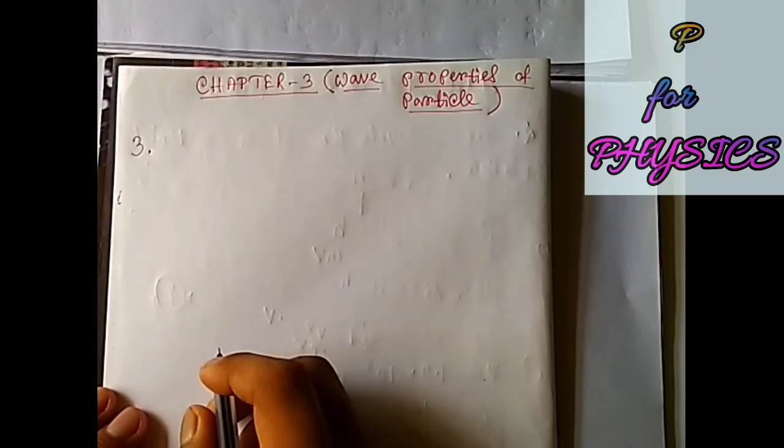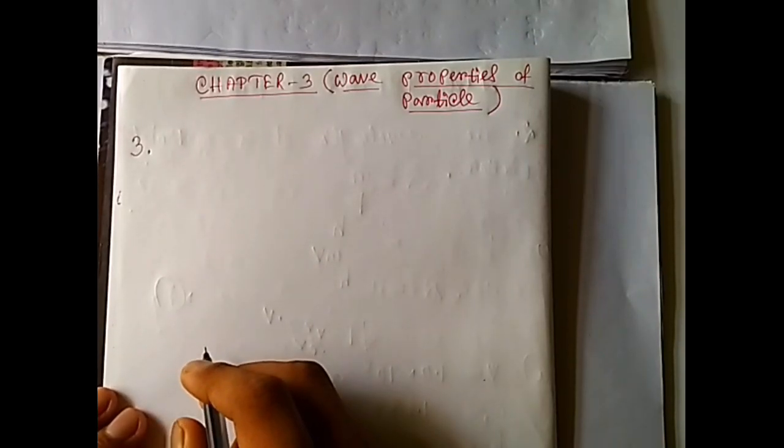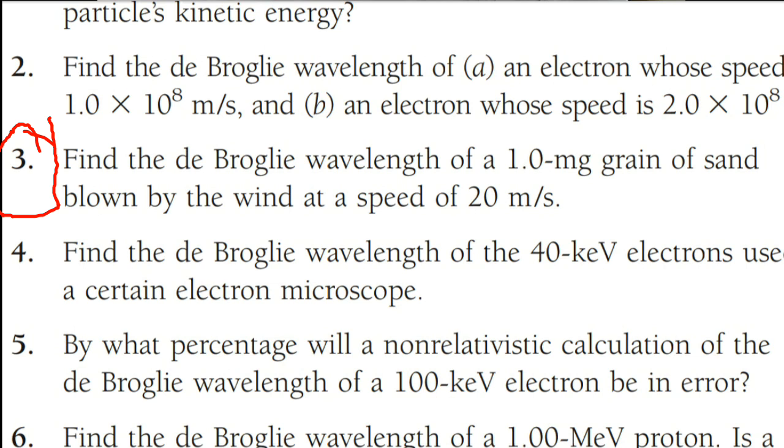Hello everyone. As you can see in this problem, we need to find the de Broglie wavelength of a 1-milligram grain of sand blown by the wind at a speed of 20 meters per second.